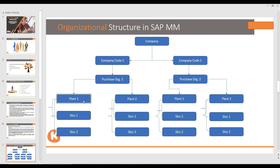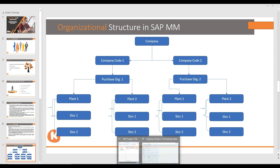Under a single company, you can have multiple company codes. You can have a single purchasing organization for all company codes, or multiple purchasing organizations specific to each company code, as per the requirement. You have to define the company hierarchy structure in the SAP system. We are going to show the company hierarchy structure using transaction code EC01.